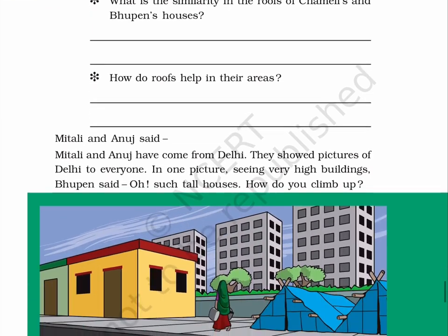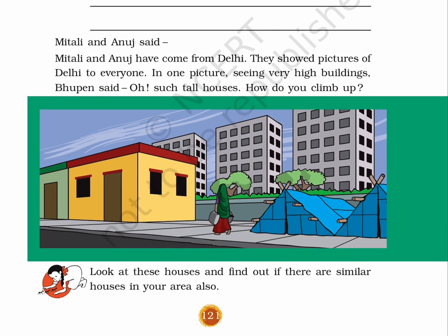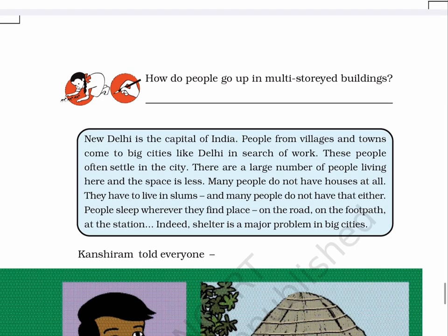Mitali and Anuj said — Mitali and Anuj have come from Delhi. They showed pictures of Delhi to everyone. In one picture, seeing very high buildings, Bhupen said, 'Oh! Such tall houses! How do you climb up?' There is a picture given on page No. 121. This is the picture of a metro city. In this picture, some multi-storey buildings, some single-storey houses and some tent houses are given on the left and right side of the road, and a woman is carrying a few things in her hand. Look at these houses and find out if there are similar houses in your area also.